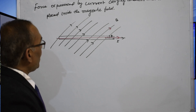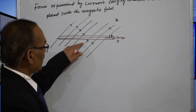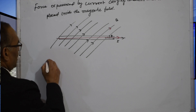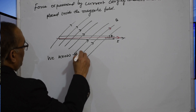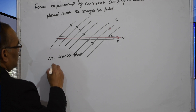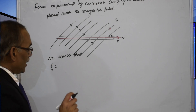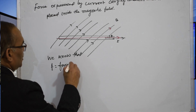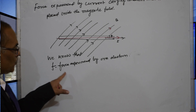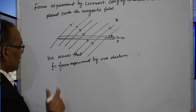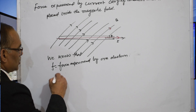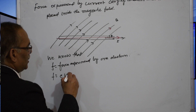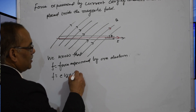Now we are going to find the force experienced by this current carrying conductor. A small f is the force experienced by one electron, and this force is equal to f equals A into V_d B sin theta.